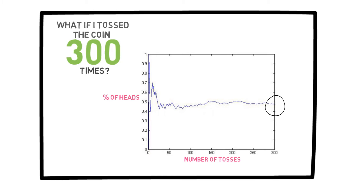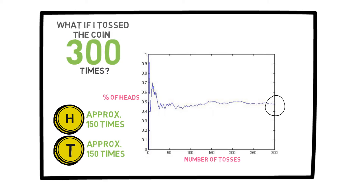So here, we could expect that the coin landed on heads close to 150 times and tails close to 150 times. Using the computer simulation, you can see there is some fluctuation in the beginning because the number of coin tosses is still small. However, as the number of tosses increases, the portion of heads becomes closer and closer to 0.5, which is 50%. This is called the law of large numbers, and we will revisit this concept later in this course.